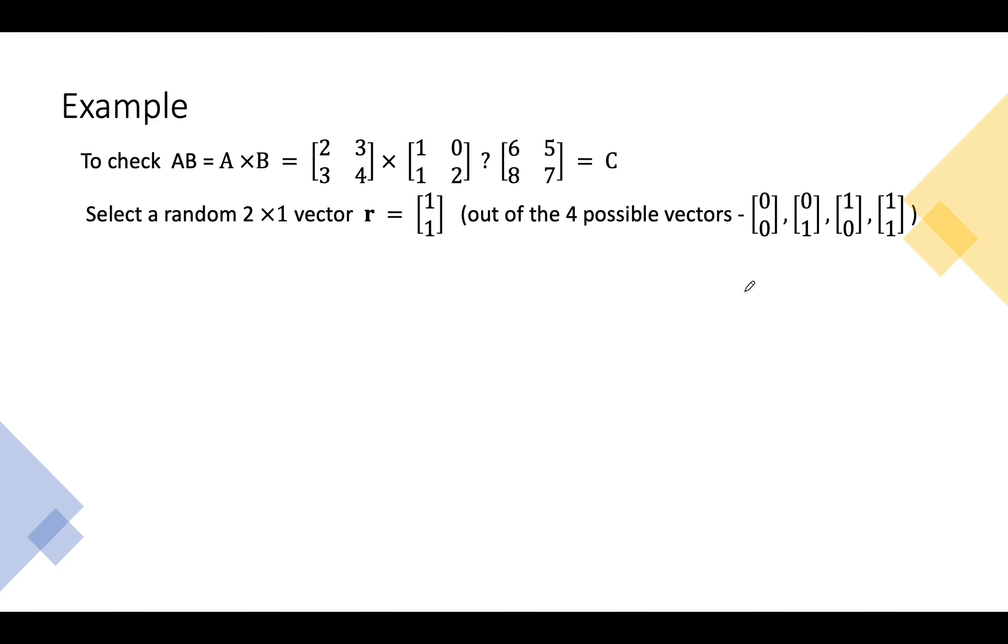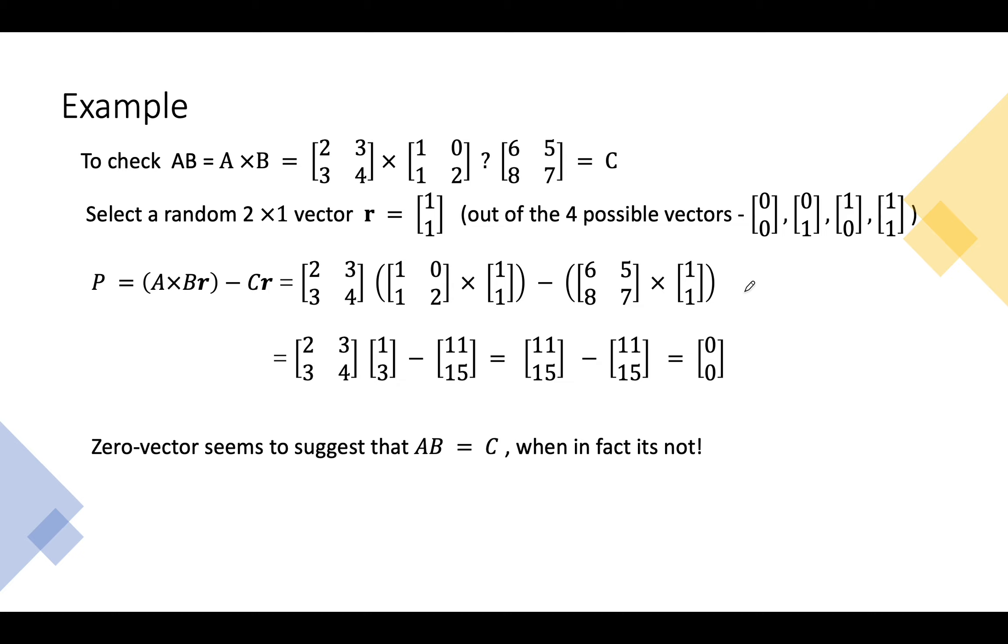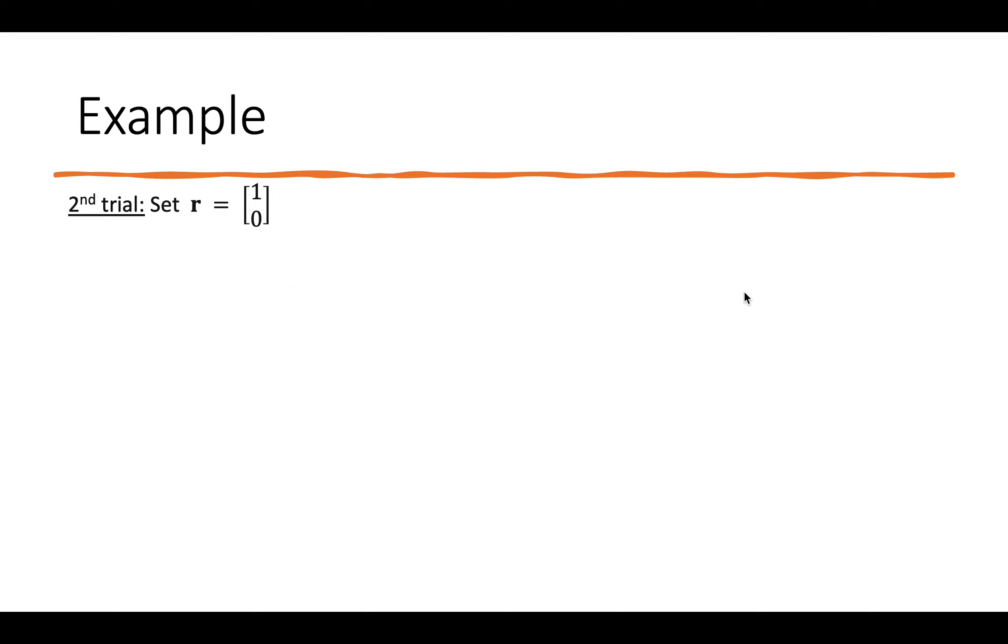Let's look at an example where we will try to apply Freivald's algorithm to verify matrix multiplication and we're going to run the algorithm for two trials and see the results. We have three matrices A, B, and C and we want to check if A times B equals C. First we select a random 2 by 1 vector r out of four possible vectors. We compute p as A times Br minus Cr and the result we get is a 0 vector. Now as for the algorithm this seems to suggest that AB equals to C, but in fact it's not. The actual AB is the matrix 5, 6, 7, 8.